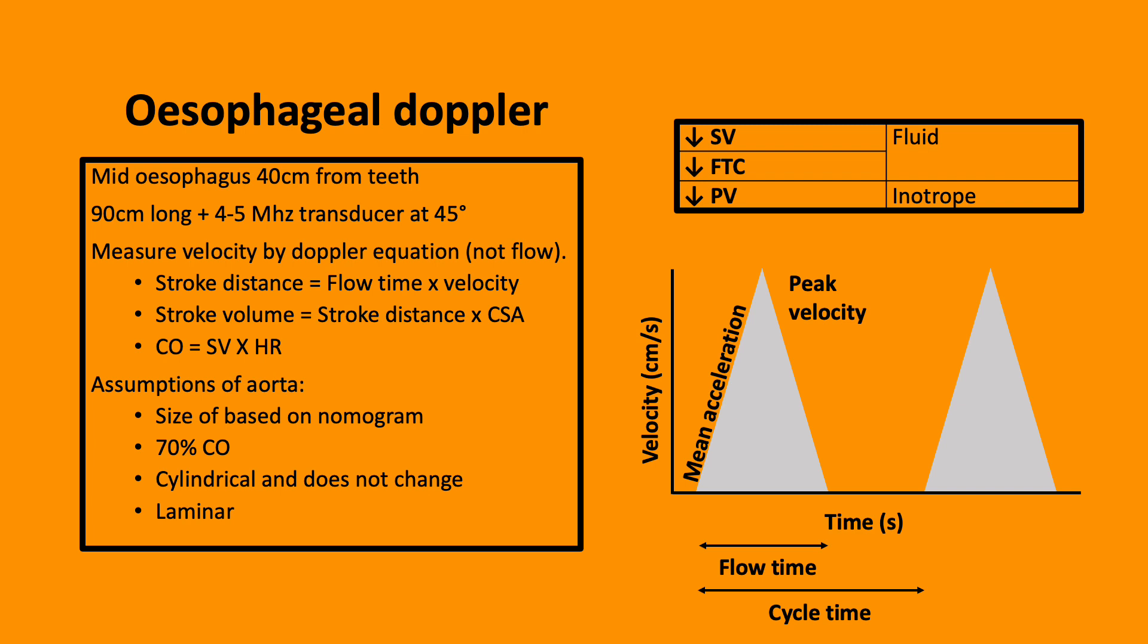And the area under the curve is equal to stroke distance, i.e., the distance the column of blood travels along the aorta during each ventricular cycle.